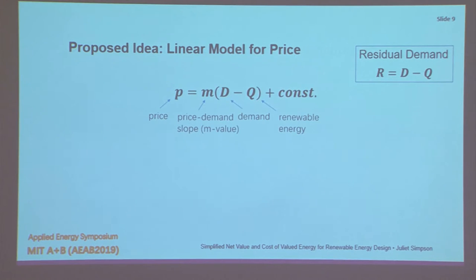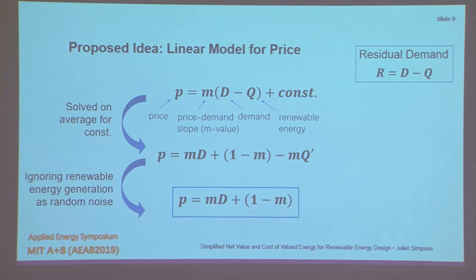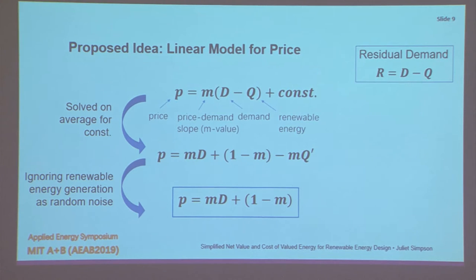Bringing that all together, we have this linear model that relates price — through this price-demand slope, which is regionally dependent — to residual demand, or demand minus renewable energy. We solved for the constant in this equation on average; all values are non-dimensional. In the final iteration, Q-prime is the variation of renewable generation about the mean. Since most of the regions we're looking at right now have fairly low renewable energy penetration, we can ignore that variation as random noise. But we know that once renewable energy penetration increases, we can factor that back into the model.